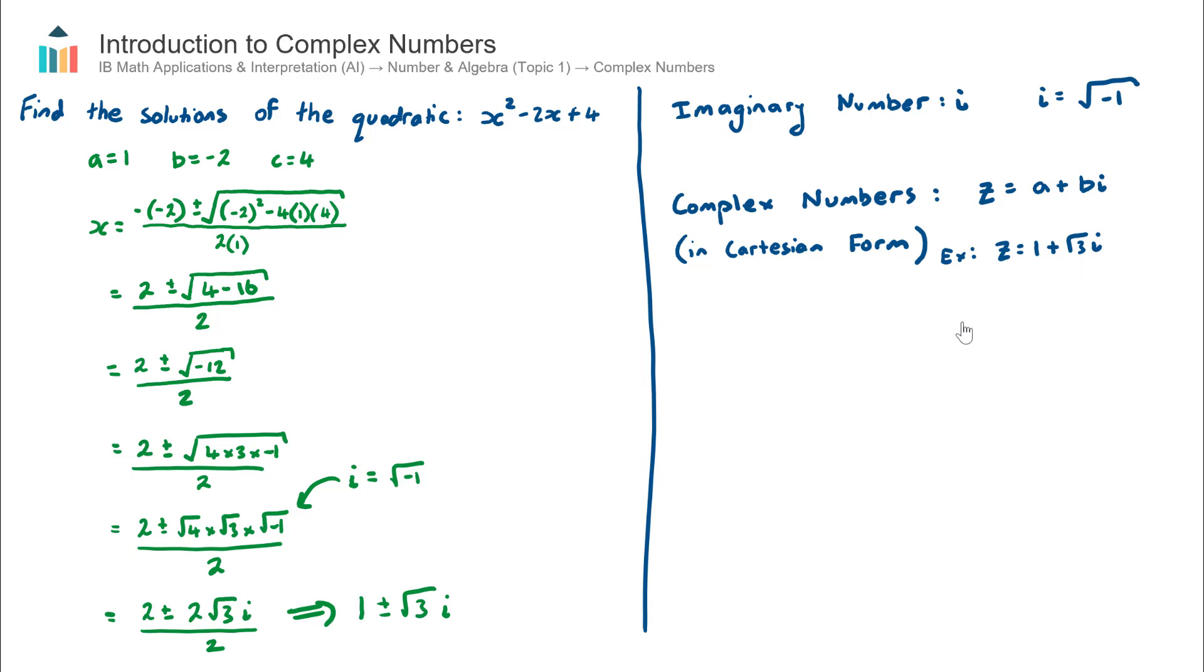And you can actually write that down, so the proper notation of defining that will be: the real component of my complex number z is equal to 1, and the imaginary component of my complex number z is equal to √3.